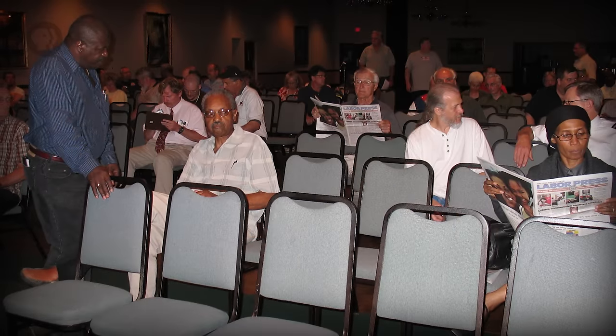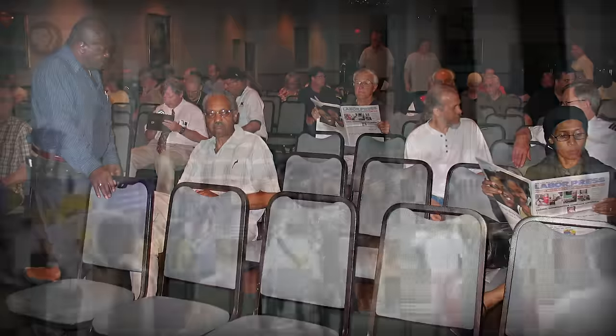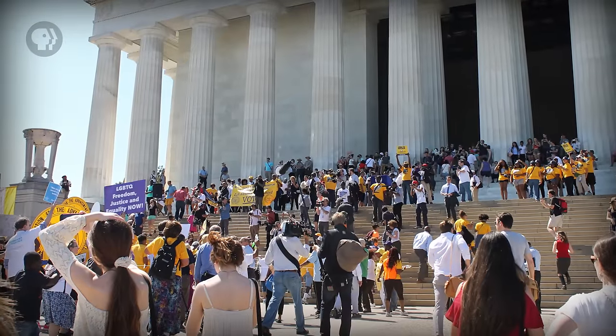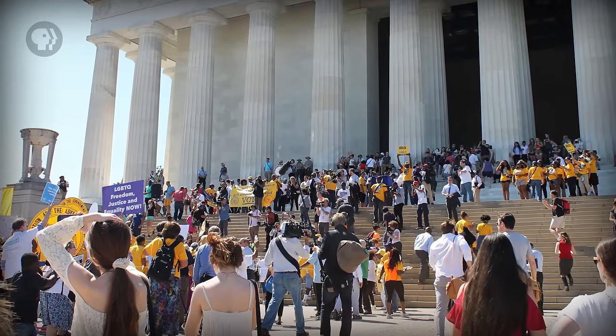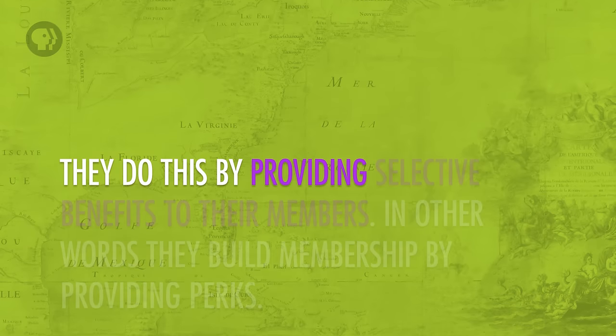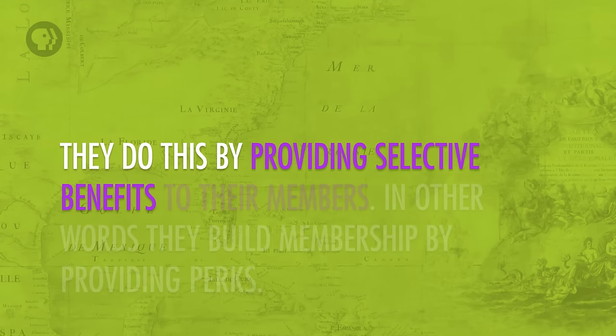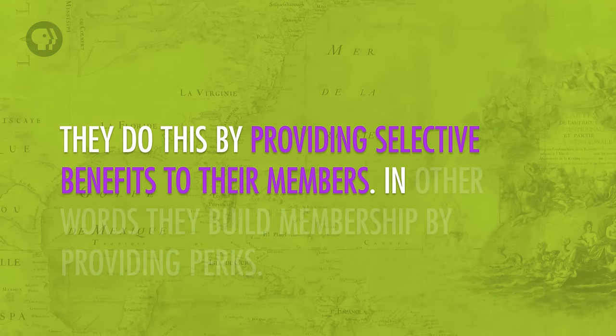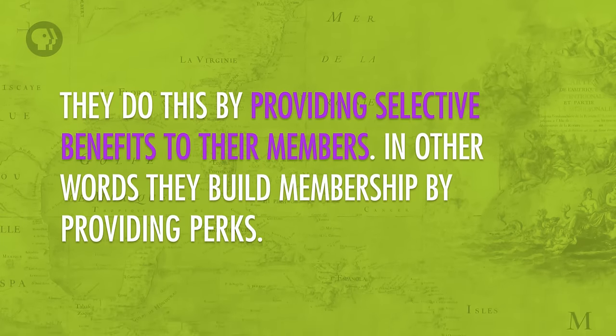So how do large groups solve the collective action problem and actually coordinate to get things done? According to political scientist Mancur Olson, they do this by providing selective benefits to their members. In other words, they build membership by providing perks. These can be material things, like special services, or discounts on things like insurance, or smaller things like baseball caps or bumper stickers.